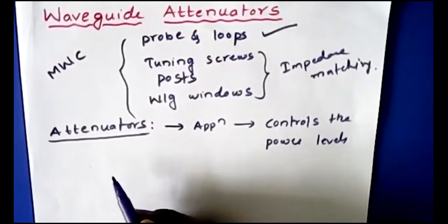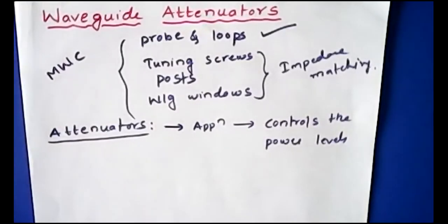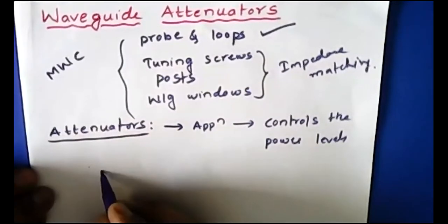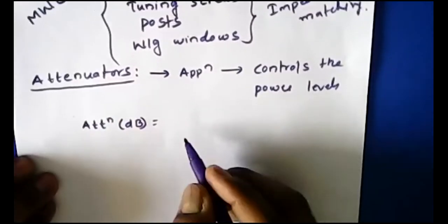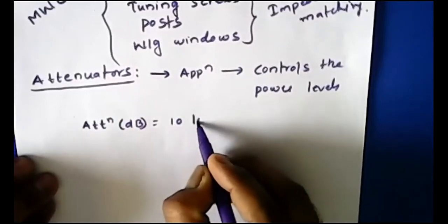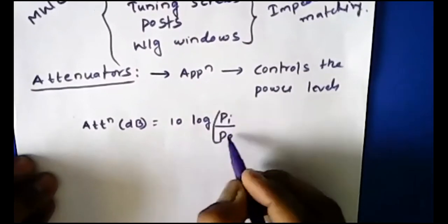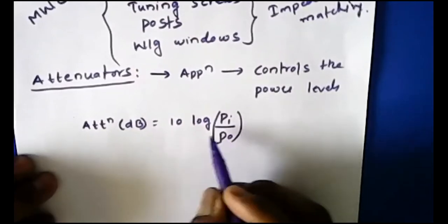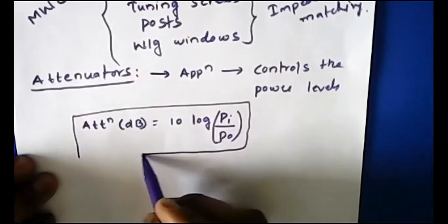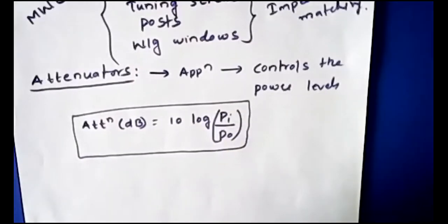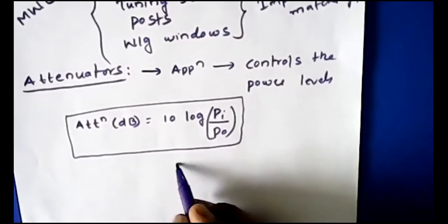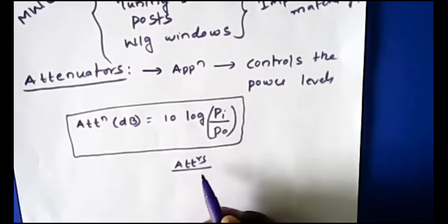Based on the type and construction, attenuators are classified into two types. Before going to the classification, we can measure attenuation using the normal definition: attenuation is in terms of dB, calculated as 10 log(Pi / Po), where Pi is the input power and Po is the output power.